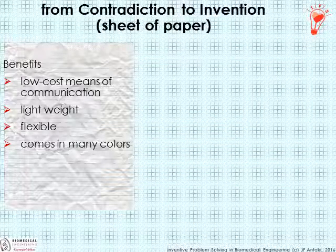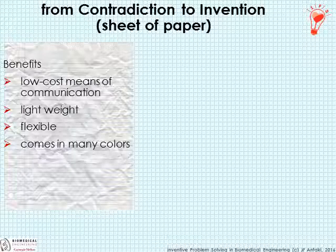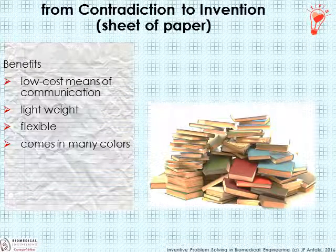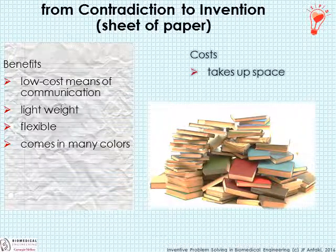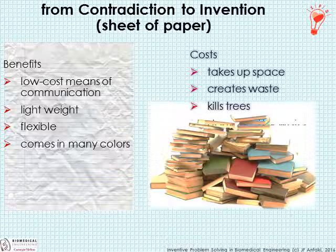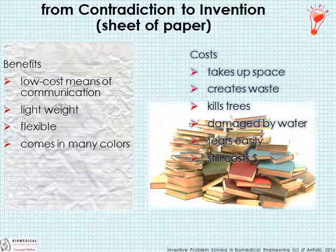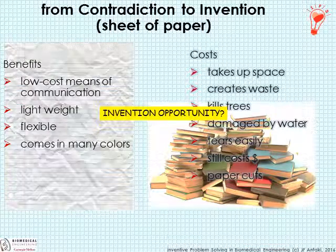Here's a mundane but illustrative example. Take a sheet of paper: it's a low-cost means of communication, it's lightweight, flexible, comes in many colors, and you could make a paper airplane. But what harm could come of paper? It takes up space, is costly to store and ship, creates waste, kills trees, is not impervious to the elements — it gets moldy, dries out, tears easily, gives you paper cuts. That implies an opportunity for invention, because ideality is not optimal. Yet paper has existed in this form since the beginning of written history and hasn't changed very much.